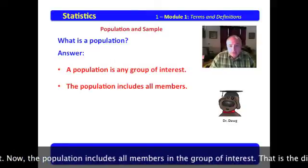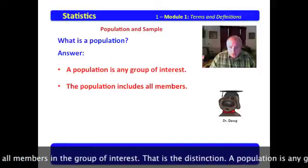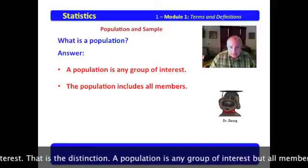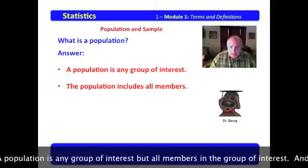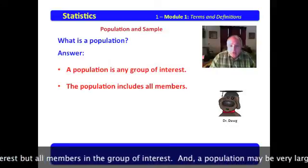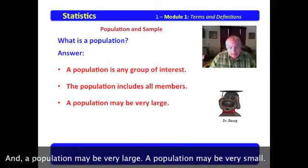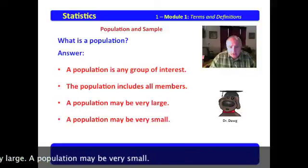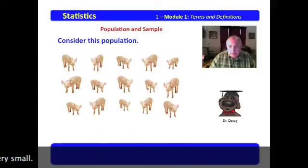Now the population includes all members in the group of interest. That is the distinction. A population is any group of interest, but all members in the group of interest. And a population may be very large, a population may be very small.